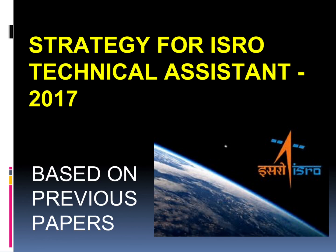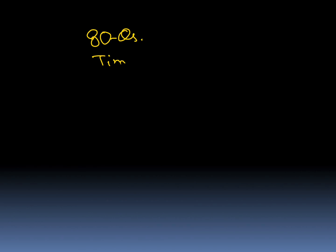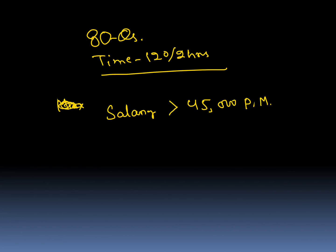ISRO Technical Assistant is a very prestigious post for diploma holders — one of the best jobs, with around 45,000 salary. The total number of questions is 80, and your time is 120 minutes or 2 hours. Out of 80 questions, maximum questions are theory; around 15 questions are problems, which will take more time.